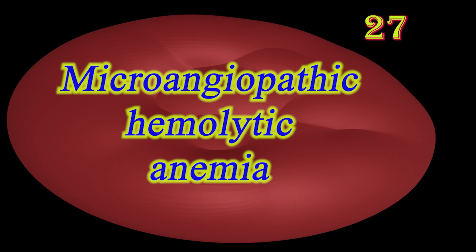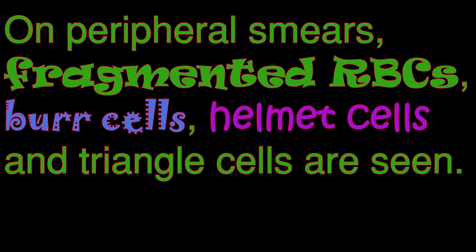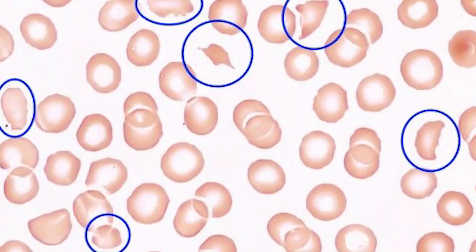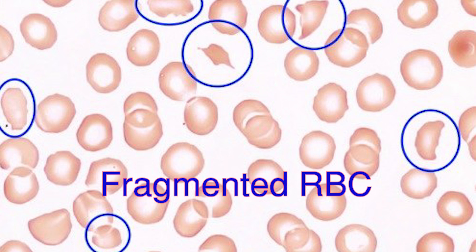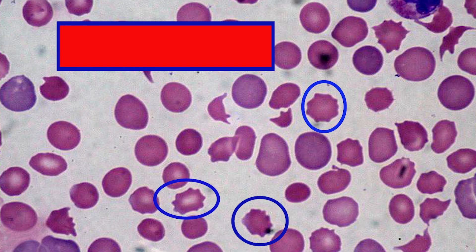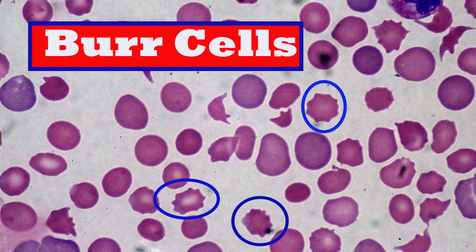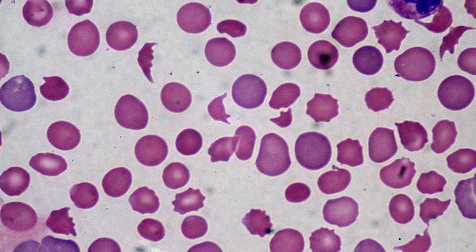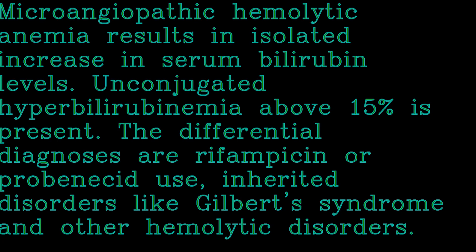Microangiopathic hemolytic anemia occurs in diseases such as hemolytic uremic syndrome, disseminated intravascular coagulation, thrombotic thrombocytopenic purpura, and malignant hypertension. The endothelial layers of some vessels are damaged with resulting fibrin deposition and platelet aggregates. As blood cells travel through these damaged vessels, they are fragmented, resulting in intravascular hemolysis. The resulting schistocytes are also increasingly targeted by the spleen for hemolysis.